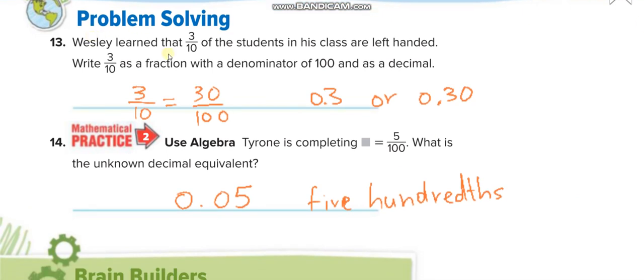Okay, Wesley learned that 3 over 10 of the students in his class are left-handed. So 3 over 10, you can write it as 30 over 100, 0.3 or 0.30. 5 over 100, its decimal is 0.05, five hundredths.